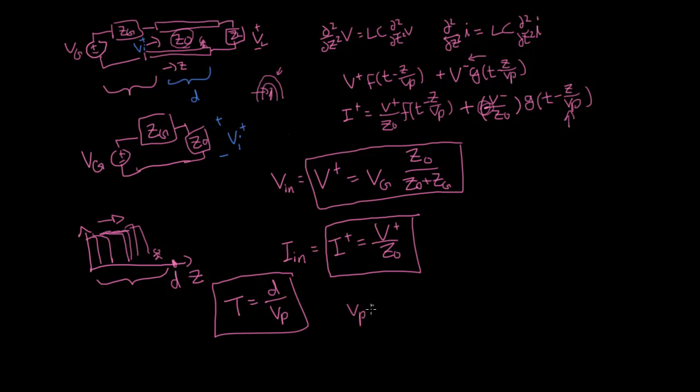Where Vp, again, let's remember our relationship, it's the square root of 1 over LC, depending on the type of the transmission line.